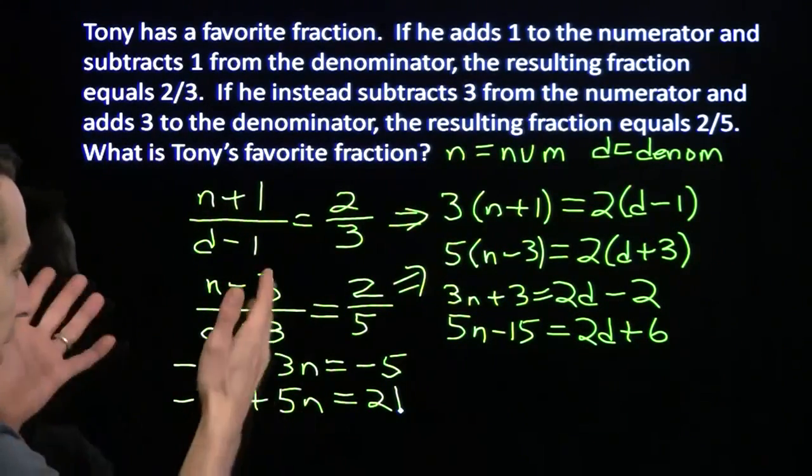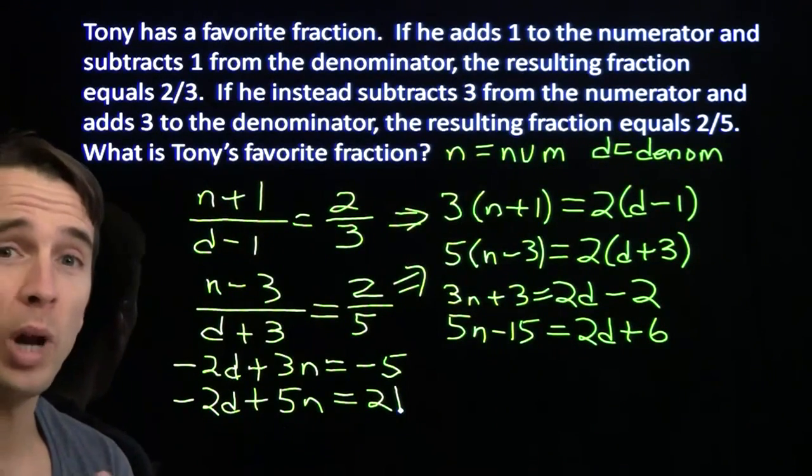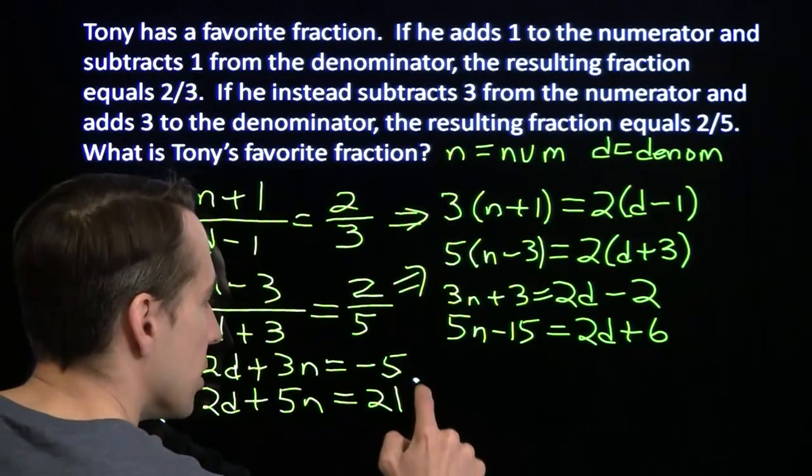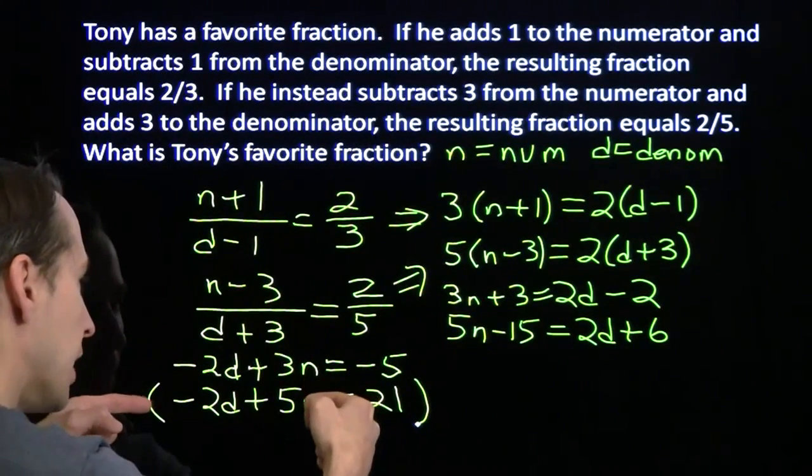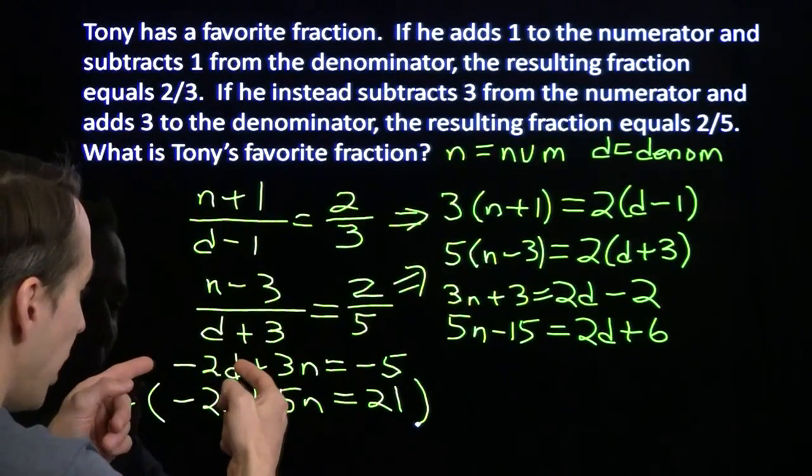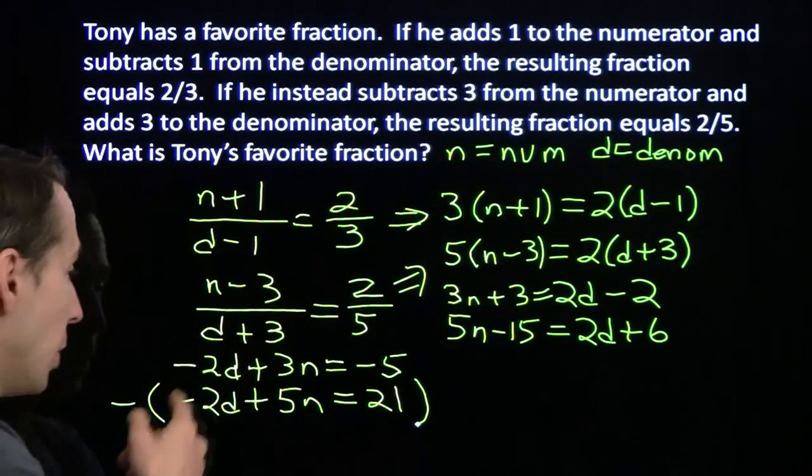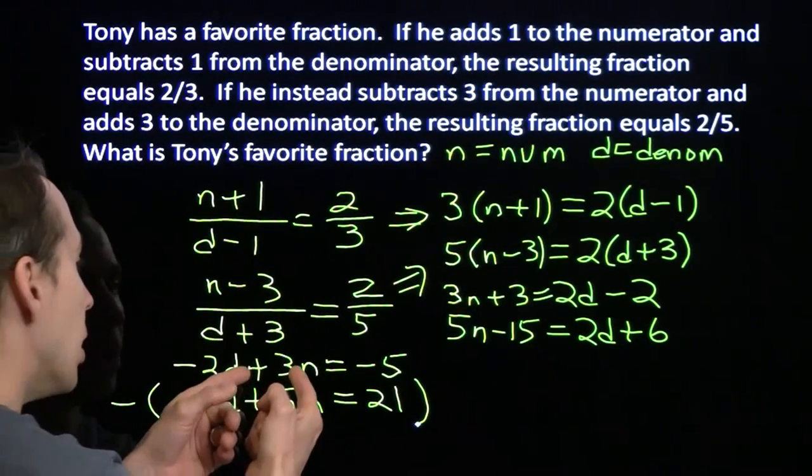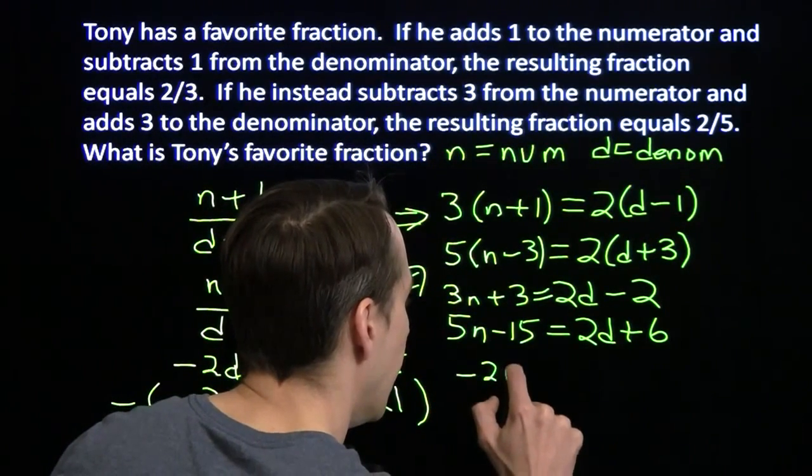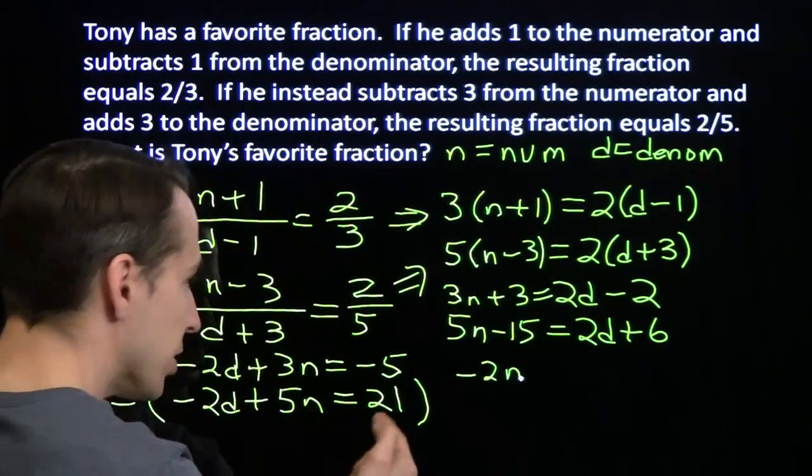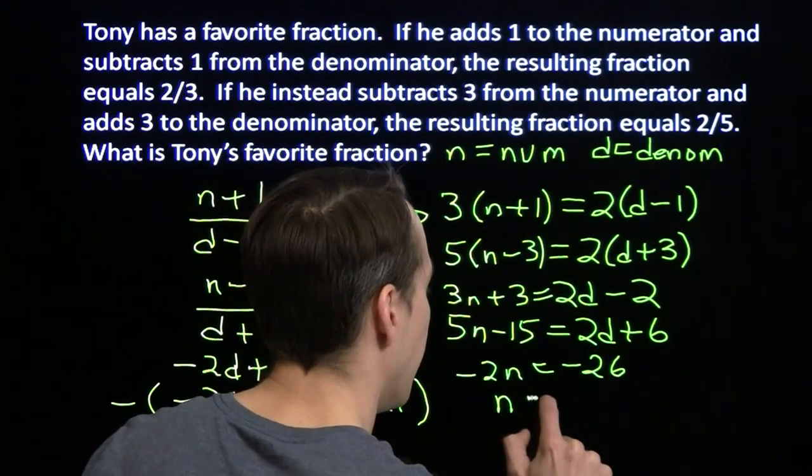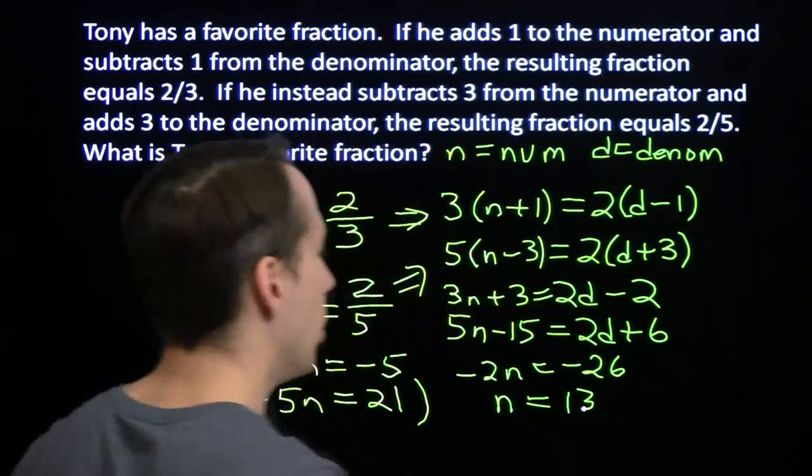Now here, I can multiply either of these equations by negative 1 and set up my elimination. Or what I'm going to do here is I'm going to subtract. I'm going to subtract one equation from the other. Put it like this to make it clear that we're doing this. I'm going to subtract and go this minus this is equal to this minus this. Now we have to be careful with our signs when we do this. Minus 2d minus a negative 2d, they'll cancel. Minus 2d plus 2d, that's 0. That was the whole point of this. 3n minus the 5n, that gives us minus 2n. Minus 5 minus a 21 gives us negative 26. Divide by negative 2, we get n is 13.